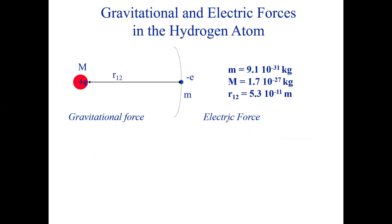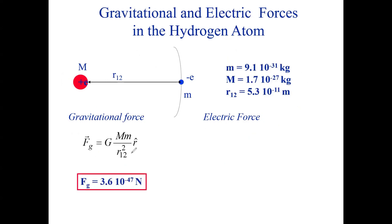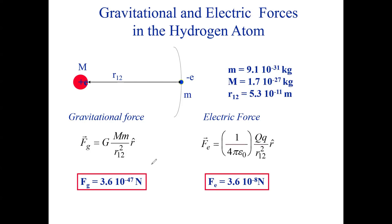Now we are going to look at the gravitational and electric forces in the hydrogen atom. In the hydrogen atom we have one electron. Hydrogen has mass number one and atomic number one, so it has one electron and one proton.